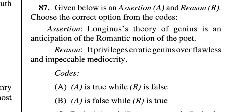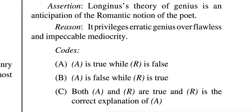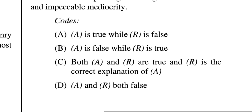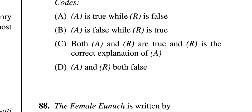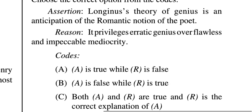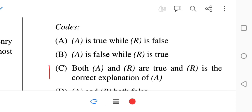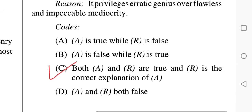Question 87: Assertion — 'Longinus' theory of genius is an anticipation of the romantic notion of the poet.' Reason — 'It privileges erratic genius over flawless and impeccable mediocrity.' Options: A — A is true while R is false; B — A is false while R is true; C — Both A and R are true and R is the correct explanation of A; D — Both A and R are false. The correct answer is C — both A and R are true and R is the correct explanation of A.